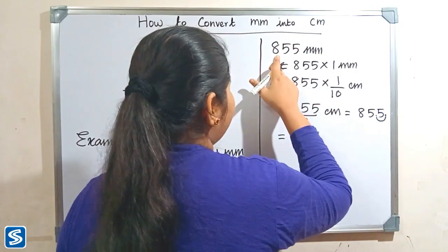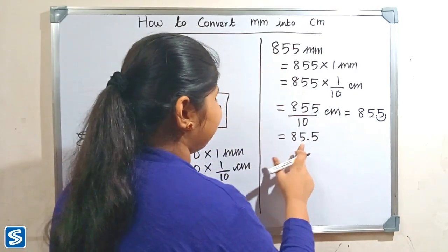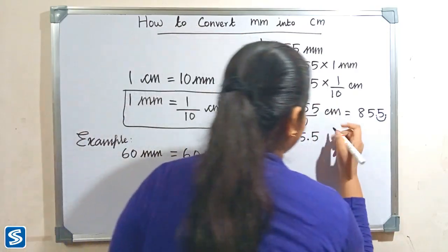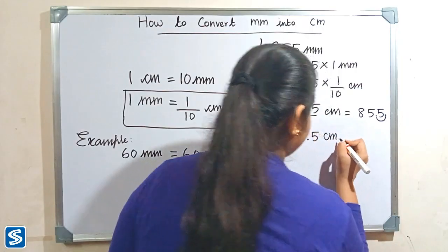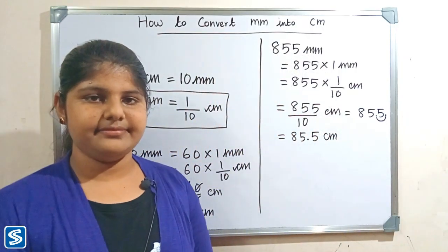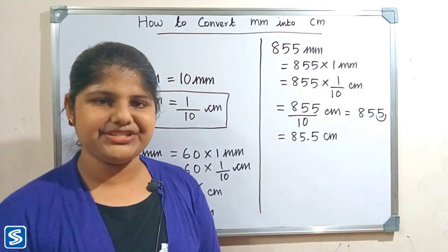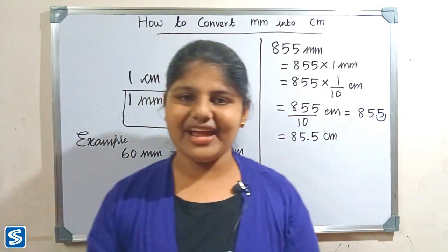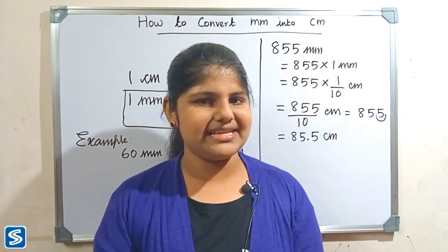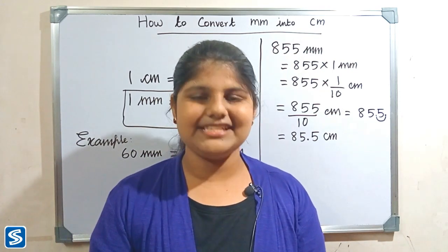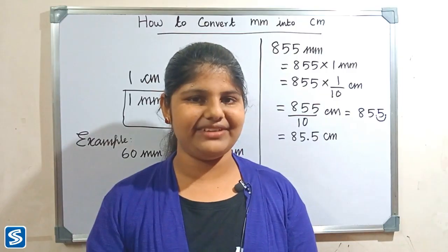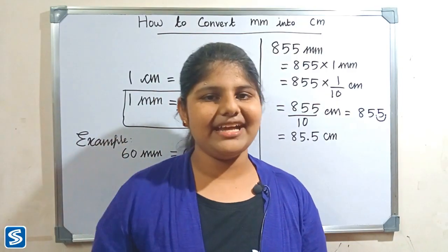So 855 millimeter is equal to 85.5 centimeter. Hope you all understood how to convert millimeter into centimeter. Okay friends, if you did not subscribe my channel, kindly subscribe to so much channel and press the bell button so you can receive all my updated videos regularly. Bye friends, thank you.